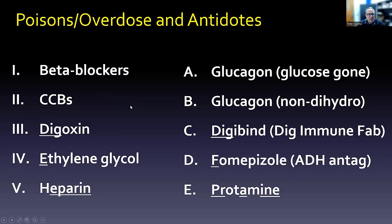Beta blockers and calcium channel blockers both use glucagon as their antidote. When you have a beta blocker, it masks the signs and symptoms of hypoglycemia — that normal increased heart rate tends to be gone. So glucagon is something you use when the glucose is gone. And glucagon again, especially with non-dihydropyridines that affect the heart much like beta blockers do — we try not to use beta blockers and non-dihydropyridine calcium channel blockers together.